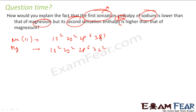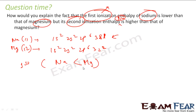Sodium has only one electron in 3s. If it loses one electron, it can become very stable. Magnesium has two electrons to lose, so sodium will lose the first electron more easily. Therefore, first ionization enthalpy of sodium is less than magnesium, because sodium is ready to lose that first electron to become stable.